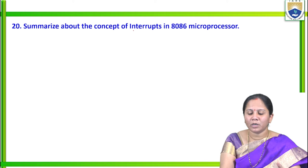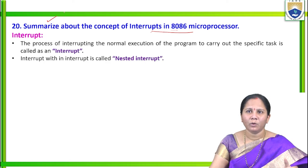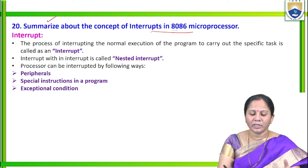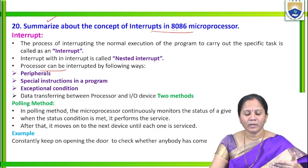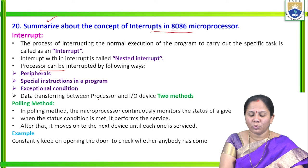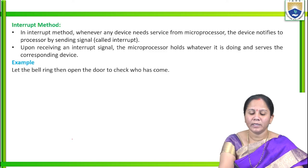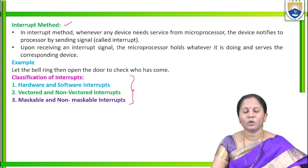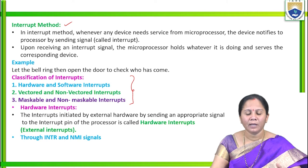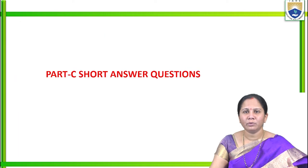The question asks to summarize the concept of interrupts in 8086 — what is meant by interrupt, different sources that can interrupt the processor, two methods of data transfer (polling and interrupt methods), and classification of interrupts: hardware/software interrupts, vectored/non-vectored interrupts, and maskable/non-maskable interrupts.